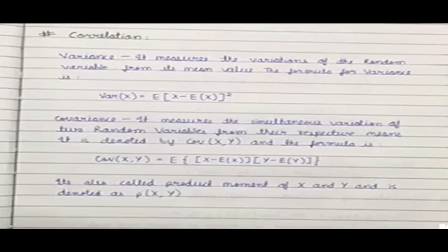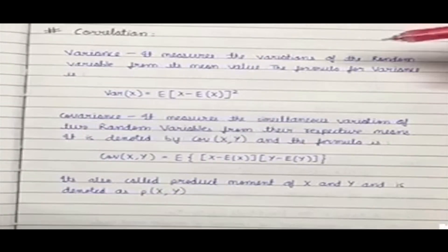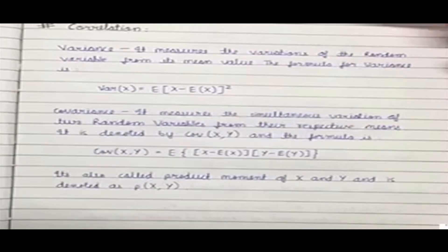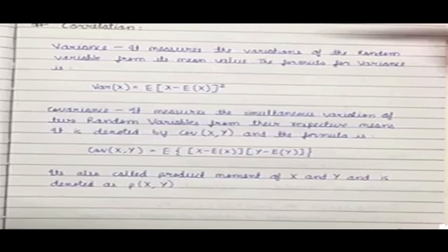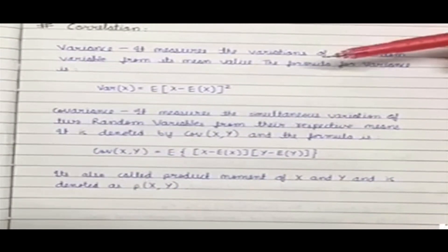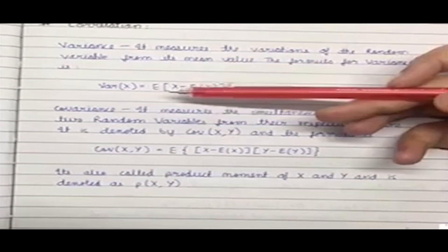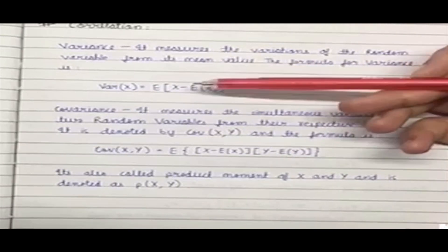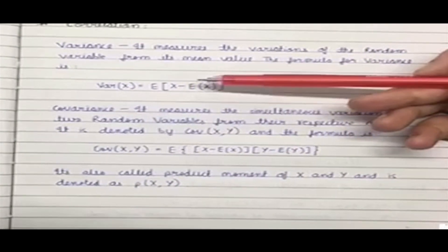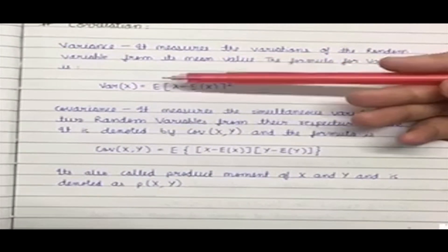Before moving to the correlation portion, let's first get clarified with the topic of variance and covariance. What do you mean by variance? Variance means the variation of a random variable from its mean value. The formula is given by variance of x — each random variable x and its difference from its mean, which is denoted by E(x), the whole squared, and then take the mean.